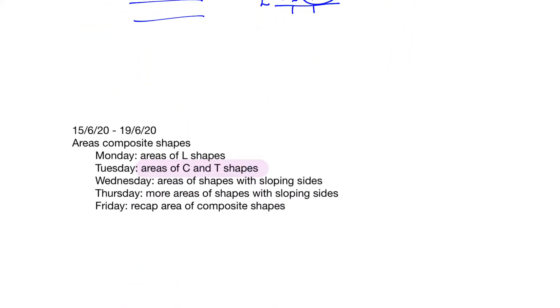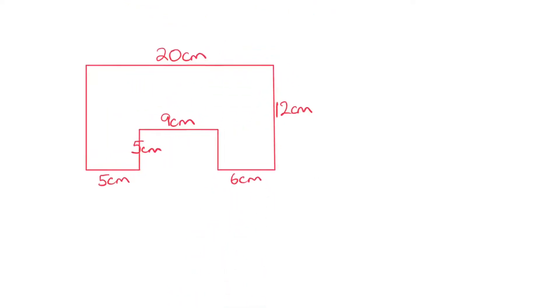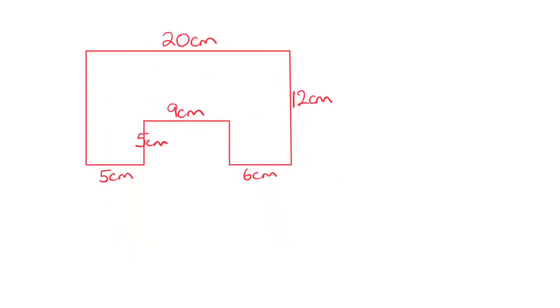Anyway, yesterday we looked at areas of L shapes, and today we're going to look at areas of C and T shapes, so it's very similar. Here's our first one to look at, our first C shape. Basically, a C shape is a rectangle with a rectangle chopped out of it. And that's how we're going to find the areas of these shapes. So what we're going to do is complete the big rectangle, and we're going to find the area of the whole big rectangle, and then we're going to chop out this small rectangle, and you can see that that will leave us with our C shape.